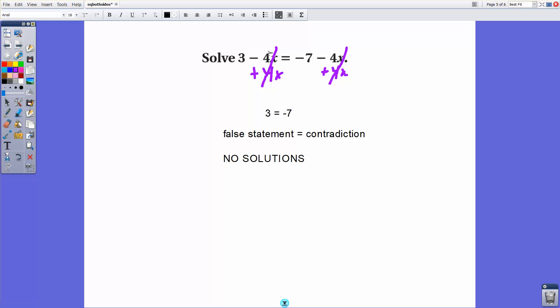No solutions means that there's no value that you can plug into x here to yield a true statement. There's nothing you can do, 3 minus 4 times a number to get negative 7 minus 4 times that same number. So contradiction. So that's no solutions.